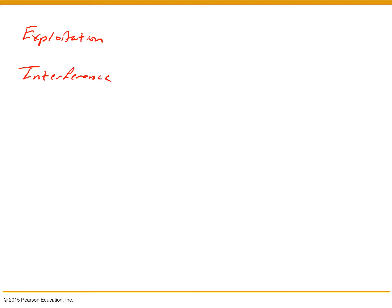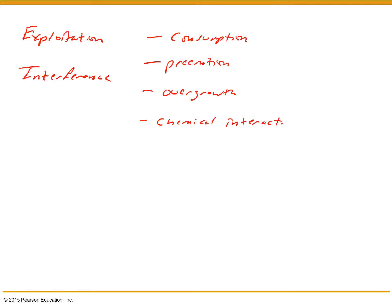More specifically, with regard to interspecific competition, most types of interactions that we see between individuals of different species can be classified in one of six categories. We have what's called consumption competition, preemption, overgrowth competition, chemical interaction, territorial, and encounter.